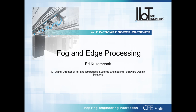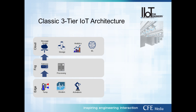Thank you for having me, Kevin. Today we're going to be talking about fog and edge processing. But before we dive right into that, I'd like to take a step back and set a baseline — talk about some terminology so that we're all using the same words. Here's a picture of the classic three-tier IoT architecture. This may be very familiar to many of you. I want to put it up here so that we have an opportunity to make sure that when we talk about edge, we're all talking about the same thing.